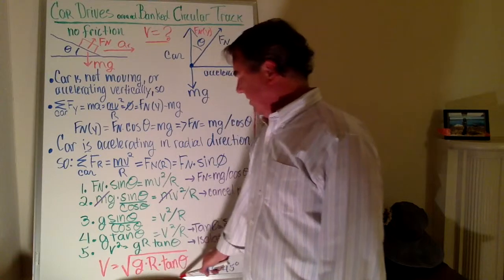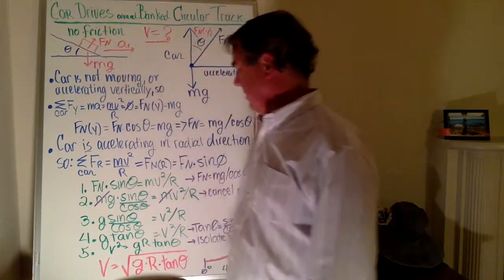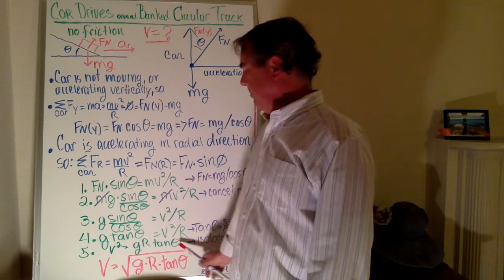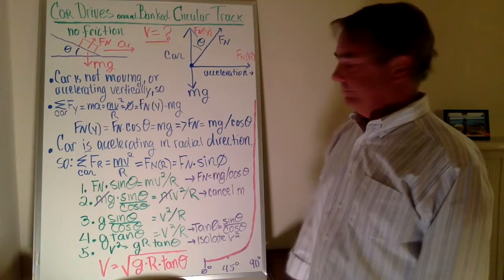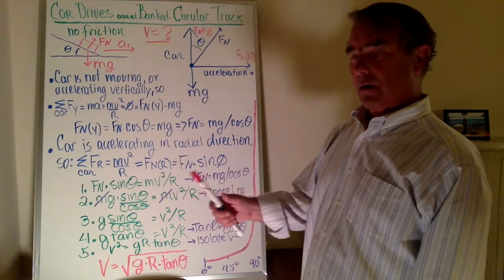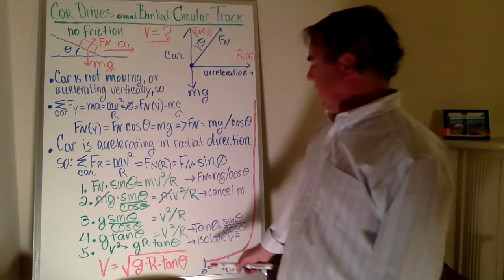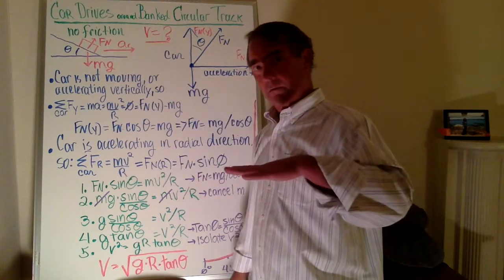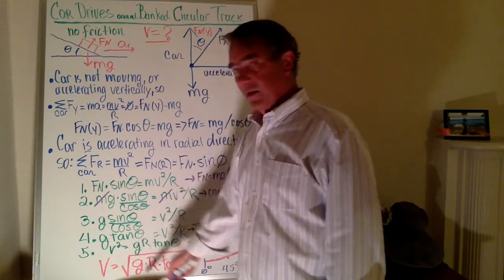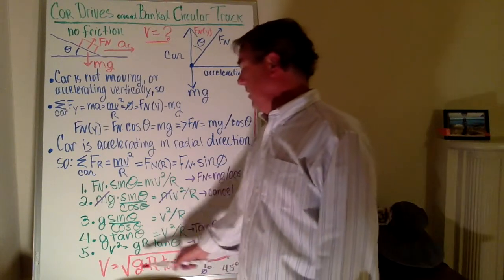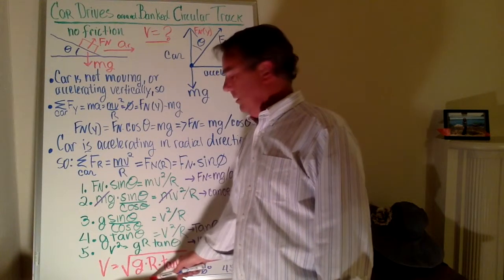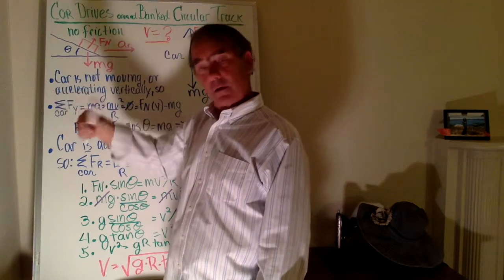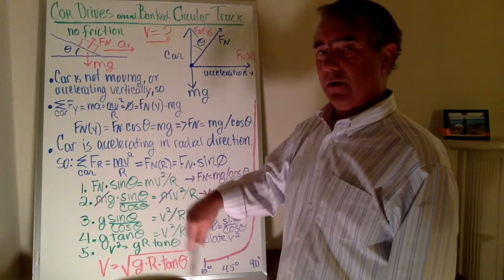The steeper the banking angle, the larger the value of tan theta, meaning the larger the design speed — which makes sense, as a steeper banking angle allows the car to travel faster. If the banking angle is zero, meaning the road surface is flat, the tangent of zero degrees is zero, so the design velocity would be zero. That makes sense: this track has no friction, so if it is perfectly flat the car won't be able to travel in a circle without friction.